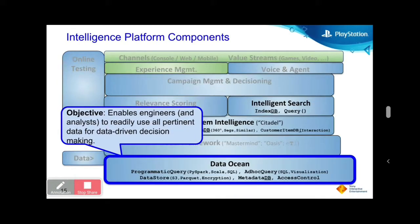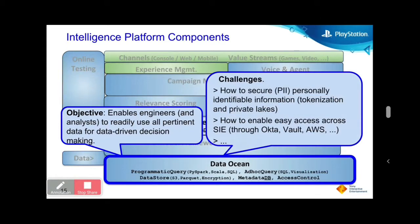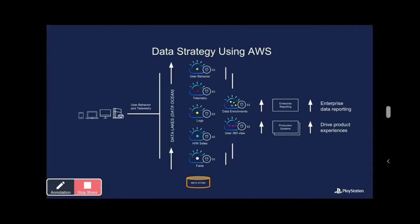Data Ocean enables engineers to access all information available in the organization while supporting privacy requirements. Challenges include how to secure personally identifiable information. Running on AWS, they use S3 to store data in Parquet files, allowing quick selection of data subsets to drive both production predictions and enterprise reporting — one place to store all data, which is critically important for enterprise data-driven methods.